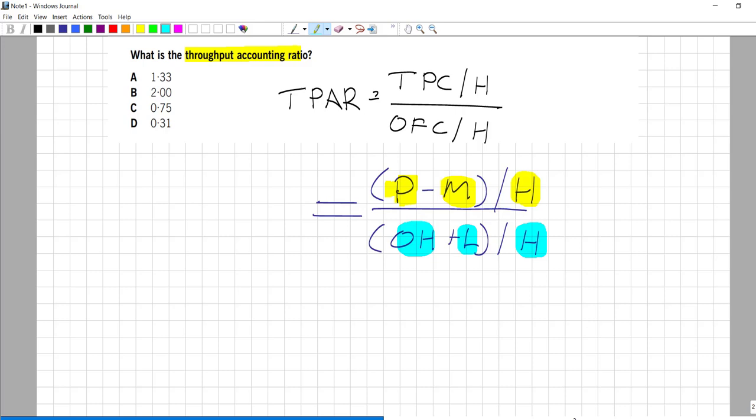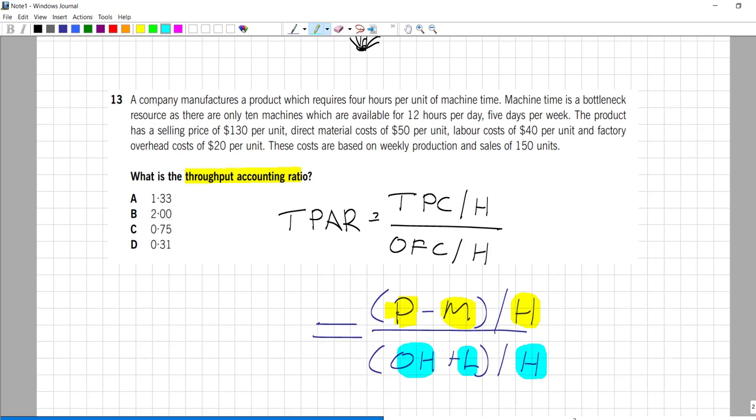We can find all these variables if we read slowly. Four hours - machine time is the bottleneck. So we found the hours. Ten machines, 12 hours a day, five days a week. That's the total bottleneck hours in a week. So first variable, second variable found. Selling price 130, direct material 50. Price, direct materials.